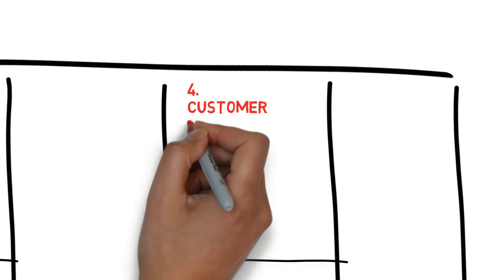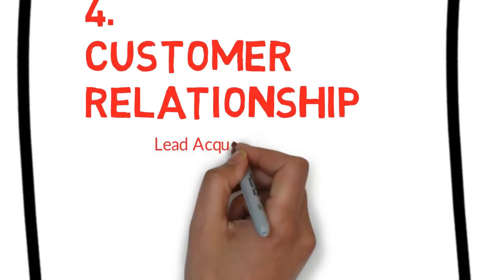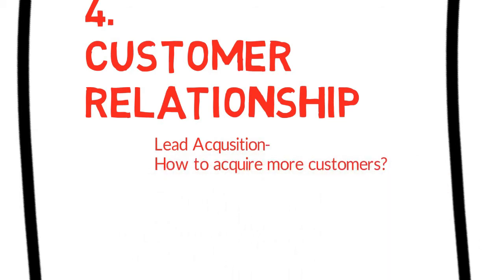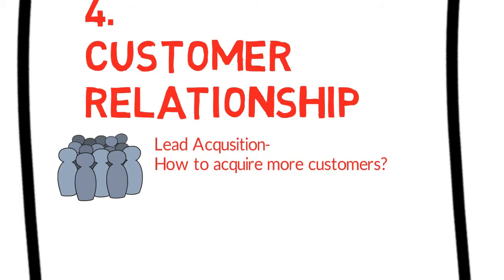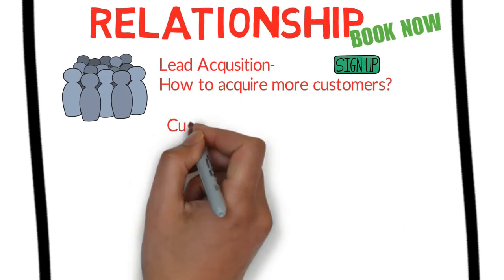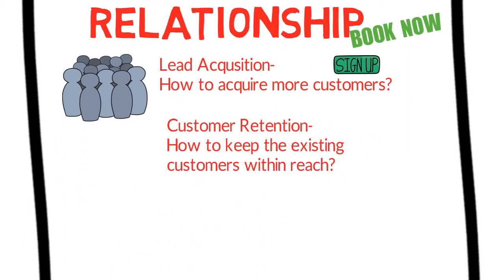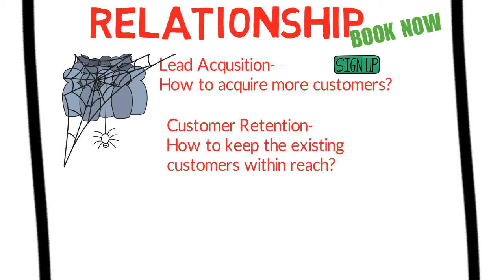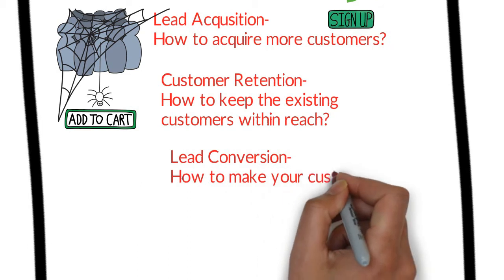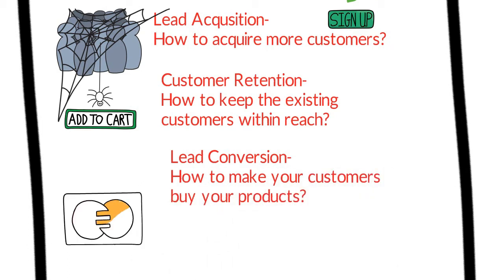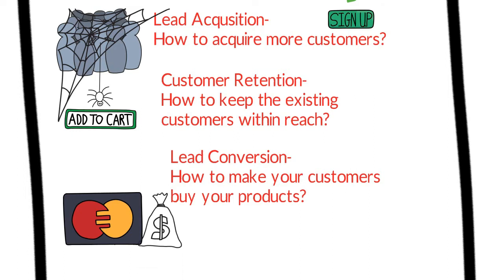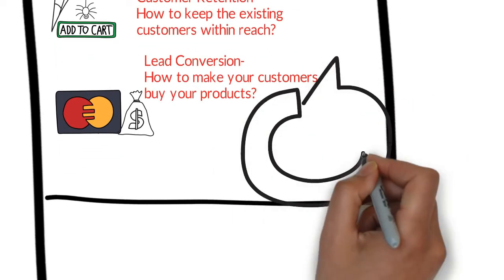The fourth is customer relationships. This is a tricky part because it is divided into three phases. The first phase is lead acquisition — how to acquire more customers, how to get people on your website and have them sign up or book now. The second is customer retention — how to keep existing customers within reach. It is very essential to keep your customers engaged so that they buy your product or services later. The third part is lead conversion — making customers buy your services or products and keeping them coming back for more purchases.